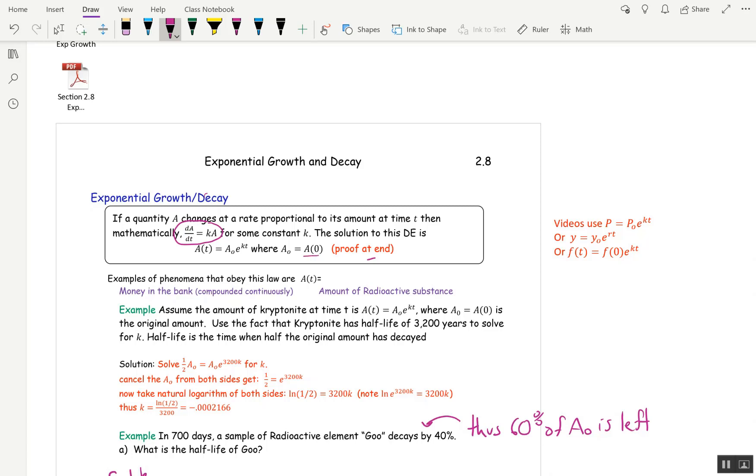Now, in the videos and in your book, you will see different formulas. P(t) = P₀e^(kt), Y = Y₀e^(rt), F = F(0)e^(kt). I see no reason in changing all the letters on you. It's one formula for all of these problems. One formula and I would just stick to these letters. A = A₀e^(kt).